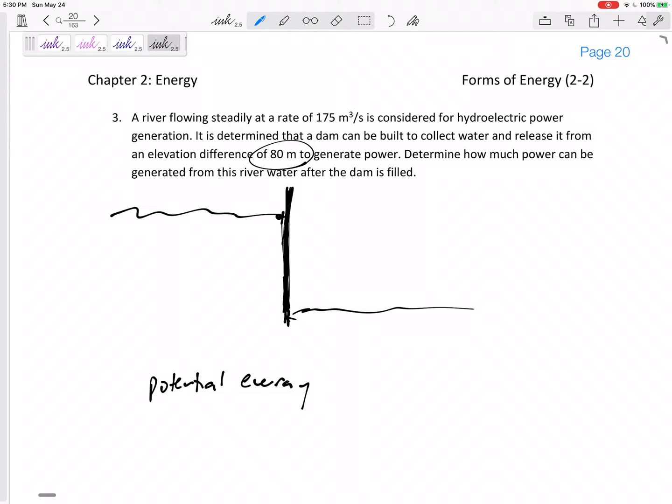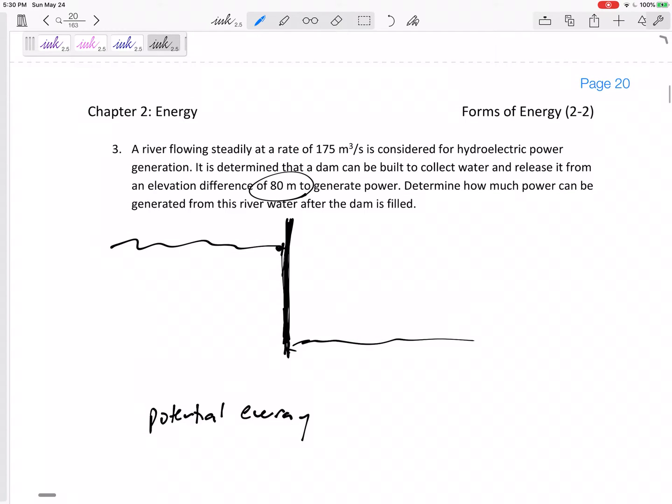What did it give us? It told us this right here, look at the units: 175 meters cubed per second, that is the volumetric flow rate V dot that it gave us. It wants to know how much power, so it doesn't want to know the specific potential energy or the total potential energy, it wants potential energy per unit time.